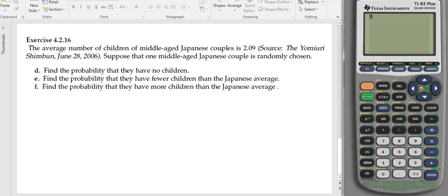This is how to solve chapter 4 homework problem, exercise number 4.2.16. The average number of children in a middle-aged Japanese couple is 2.09, from the Yomuri Shinbun, June 28, 2006. Suppose that one middle-aged Japanese couple is randomly chosen.